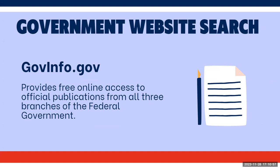Next, we have government website searches. We have govinfo.gov. This is a great place to start if you're looking for federal government documents, because it provides free public access to official publications from all three branches. I will do a demonstration of a search within govinfo in a few slides. This is free and you have access to it online.